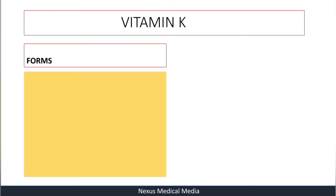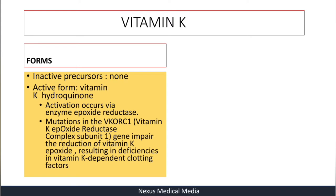The forms of Vitamin K: unlike other vitamins, for Vitamin K there is no pro-vitamin and no inactive precursor. The active form is called Vitamin K hydroquinone. Activation occurs via the enzyme epoxide reductase. If there is a mutation in the VKORC1 — that's the Vitamin K epoxide reductase complex subunit gene —